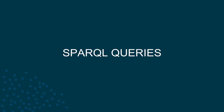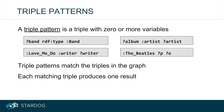Now we are ready to talk about SPARQL queries. The basic building block for SPARQL queries is triple patterns. A triple pattern is just like a triple, but you can use a variable in any one of the three positions. We use triple patterns to find the matching triples in a graph, and variables act like wildcards that match any node in the graph.